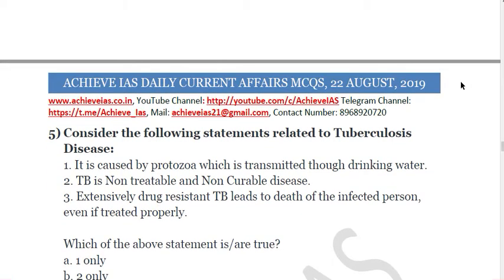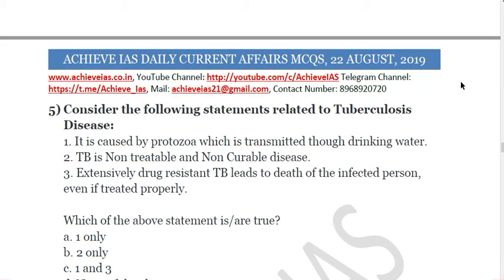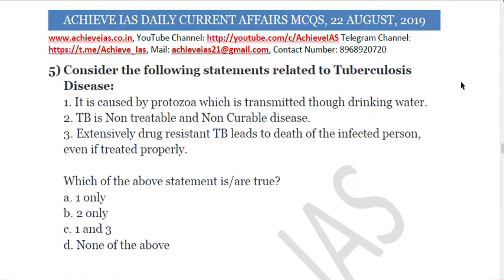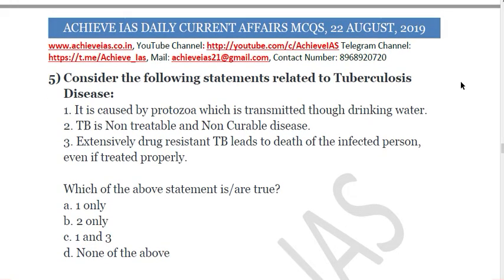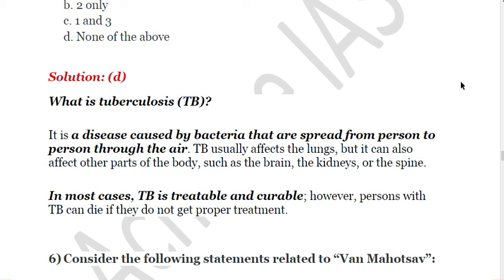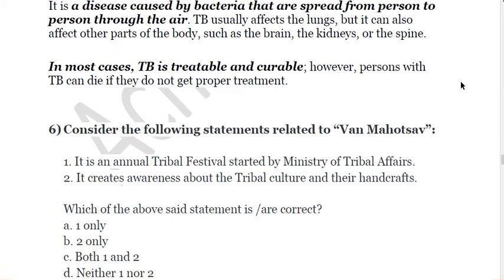The fifth question: consider the following statements related to tuberculosis. First, it is caused by protozoa transmitted through drinking water. Second, TB is non-treatable and non-curable. Third, extensively drug-resistant TB leads to death even if treated properly. All these statements are incorrect. TB is not caused by protozoa but by bacteria. It is treatable and curable, and if treated properly death can be prevented. The answer is D — none of the above.